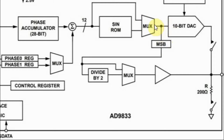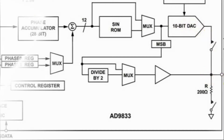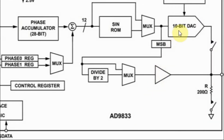The digital version of the waveform—sinusoid or triangular—is fed into a 10-bit digital-to-analog converter, which is then applied to the output pin. If the 10-bit DAC is bypassed, we get a square wave at the output pin.